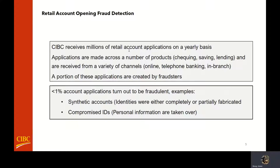Some examples of what these frauds look like: one is the idea of a synthetic account, where a fraudster would take pieces of information from different real identities, such as one person's name and another person's address. In isolation, each piece of information looks accurate and real, but in aggregate it would not make sense. Another potential source of fraud is compromised IDs, where somebody obtains the personal information of a legitimate customer, then applies for a lending product in their name and drains the account.